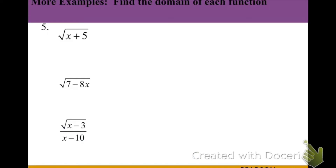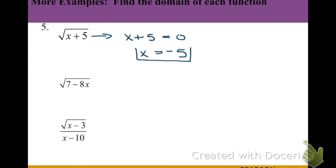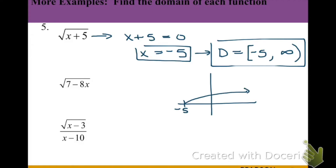Our next three examples all involve roots. The radical graph normally has a domain of 0 to infinity, so we'll use our knowledge of transformations to help find these domains. To find the restricted domain, we take what's inside the radical and set it equal to zero. We get x equals negative 5, meaning that's where we start getting negative values. So our domain goes from negative 5 to infinity — the plus 5 shifts the graph left 5 from 0 — and we put a bracket on negative 5 going all the way to the right.